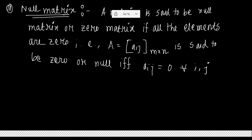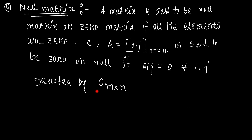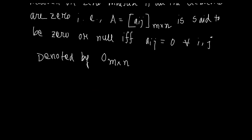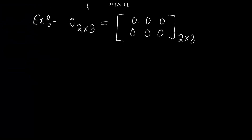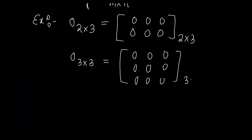For example, a 2×3 null matrix is written as [0,0,0; 0,0,0] — number of rows is 2, number of columns is 3, all elements are zero. Another example is a 3×3 null matrix where all nine elements are zero. This is a null matrix.